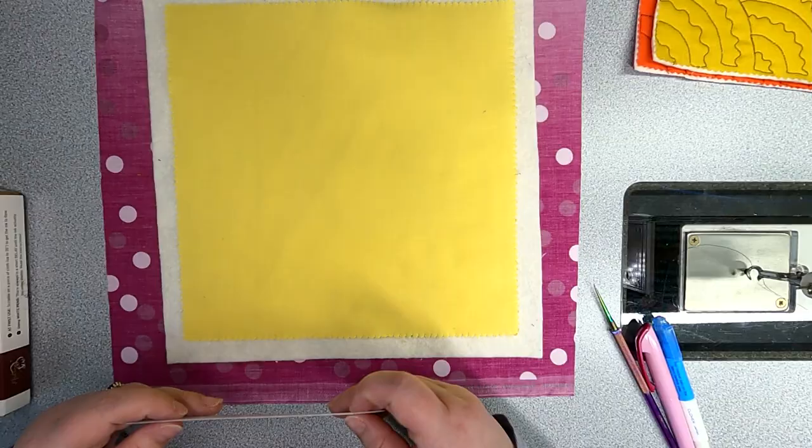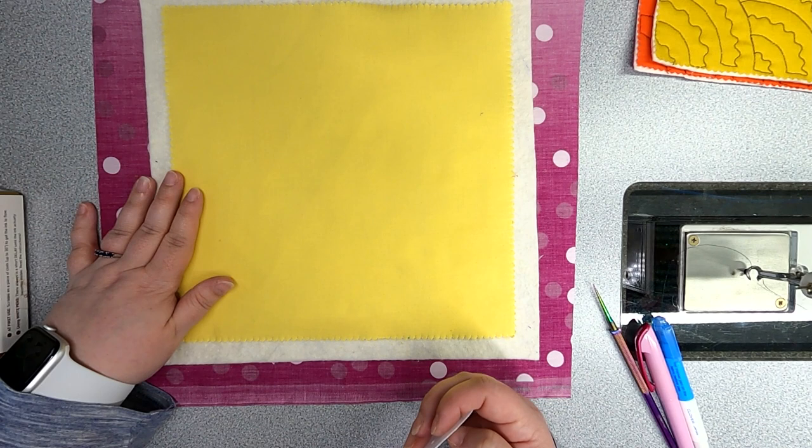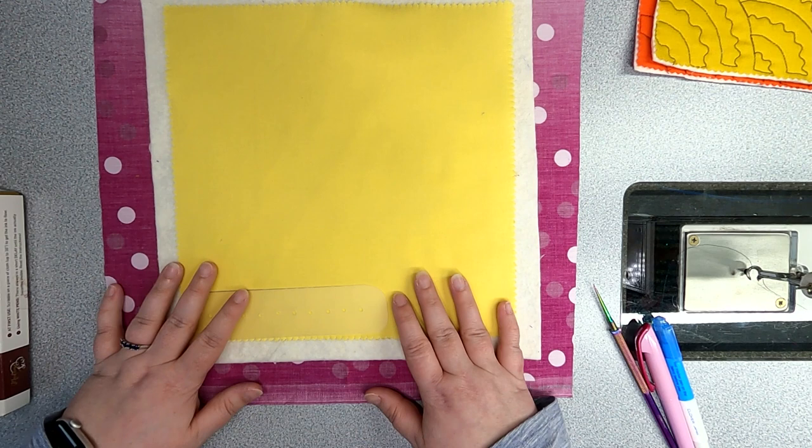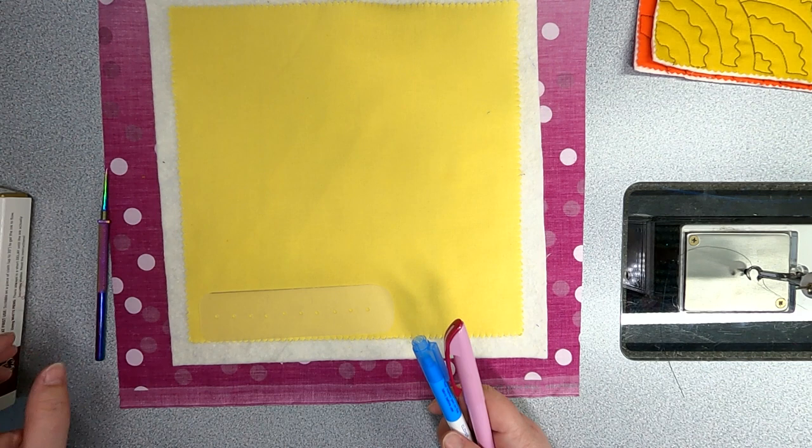Now that we have our template finished, I have my little mini quilt sandwich here and it is time to mark. You need to mark at least the section that you're working on. You don't have to mark the entire quilt all at once but it's not a bad idea either. We have a few options for marking.